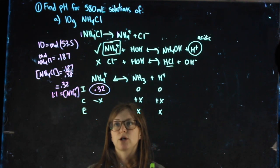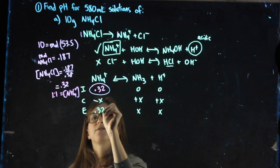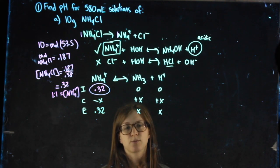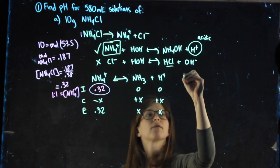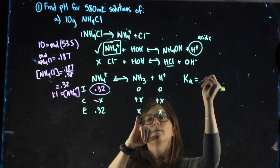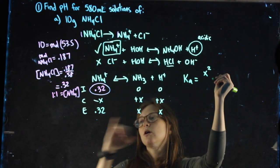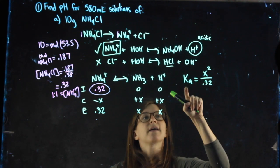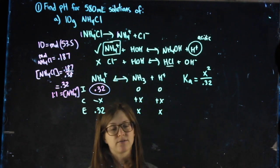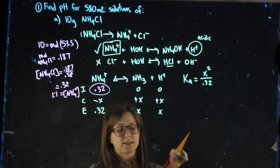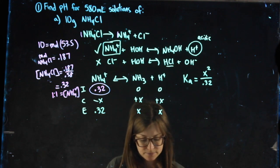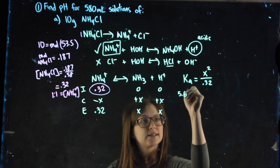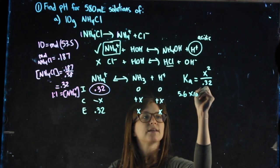Then I can keep going with my ICE chart. The x value is so small compared to the initial value that we just say it's 0.32 at the end. I can set up a Ka expression — products over reactants. The Ka value I use is for NH4+, because that's the weak acid I dissociated. It has a value of 5.6 times 10 to the negative 10.